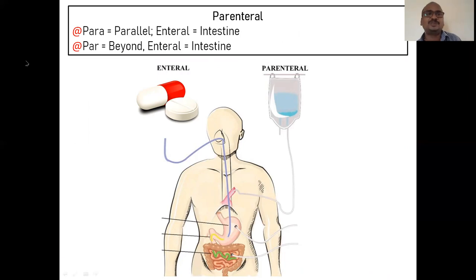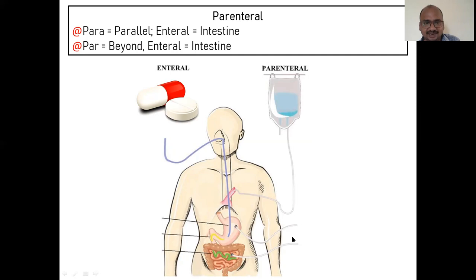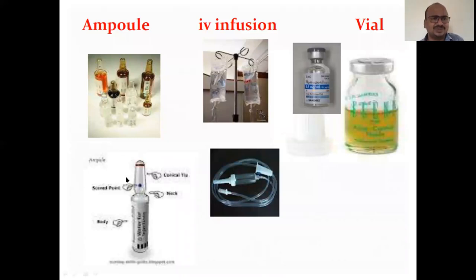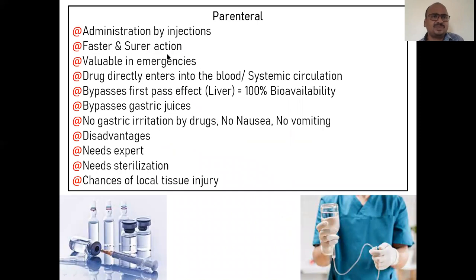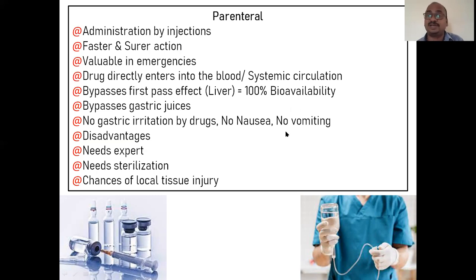Parenteral route — 'para' means parallel, 'enteral' means intestine. Enteral route is via tablets and capsules absorbed from the intestine. Parenteral is parallel to enteral — the drug is given directly into the blood. Ampoules, single-dose vials, multi-dose vials, and long-term IV infusions are all parenteral dosage forms. Parenteral administration gives faster and surer action — 100% guaranteed action — which is valuable in emergencies. Drug directly enters the bloodstream, bypassing first-pass effect, with 100% bioavailability especially for IV injection. No gastric irritation, no nausea or vomiting.